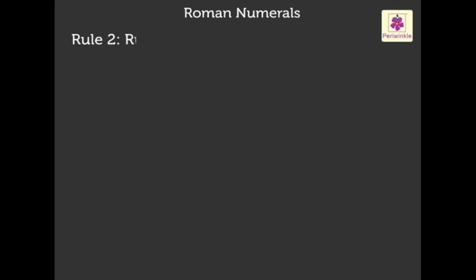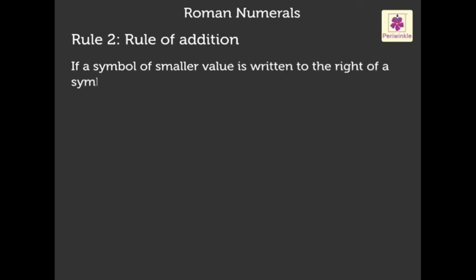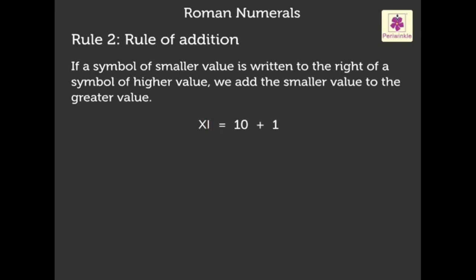Next is rule of addition. If a symbol of smaller value is written to the right of a symbol of higher value, we add the smaller value to the greater value. For example, XI: X represents 10 and I represents 1, so 10 plus 1 equals 11.